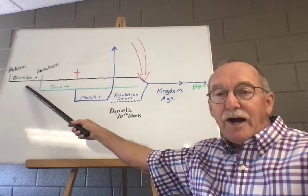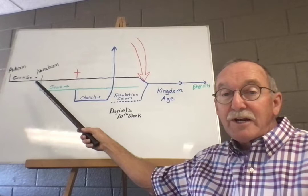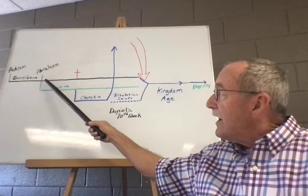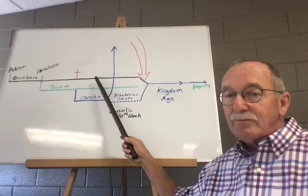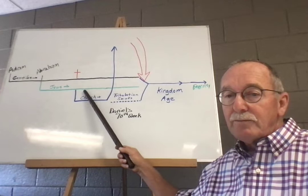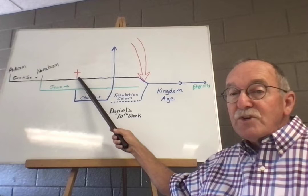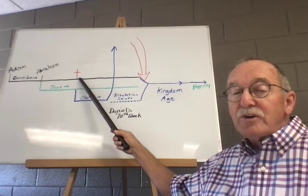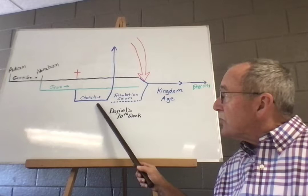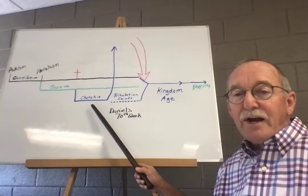If you'll notice over on the far left, it says Adam and then Abraham. What I have here are three groups of people. From the time of Adam up until the time you and I are living now, the Apostle Paul identifies three groups of people. First, there are Gentiles from Adam to Abraham. Everybody on planet Earth was a Gentile because there were no Jews yet. Beginning with Abraham going on, there were both Gentiles and also Jews. Then we have the church.